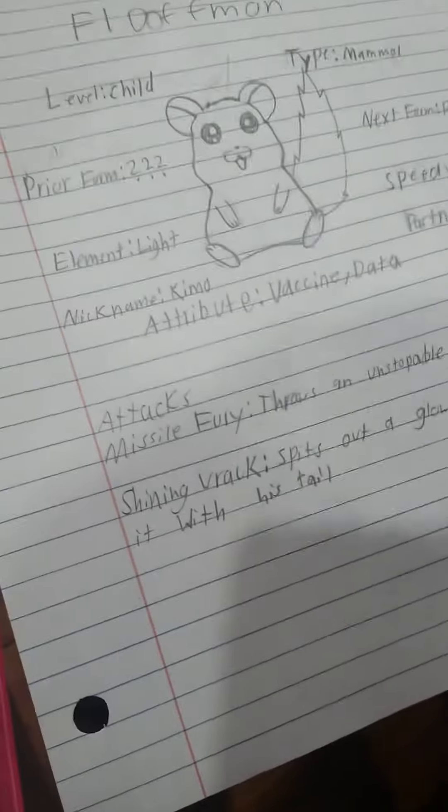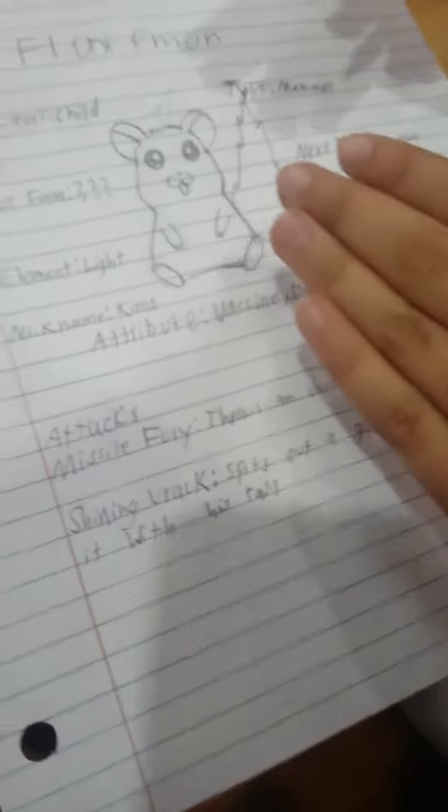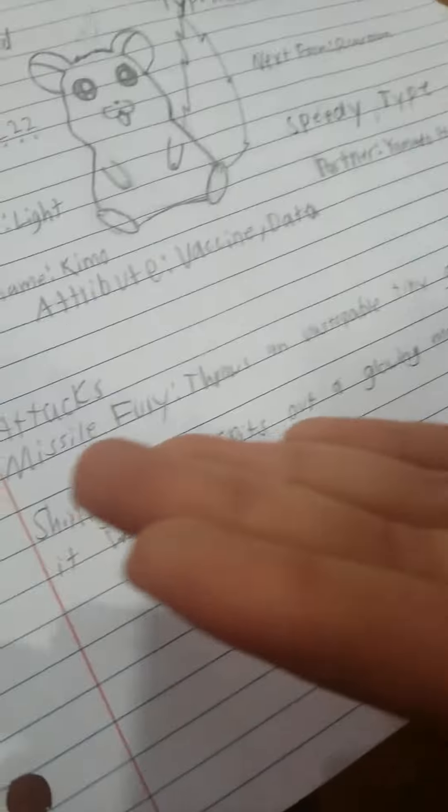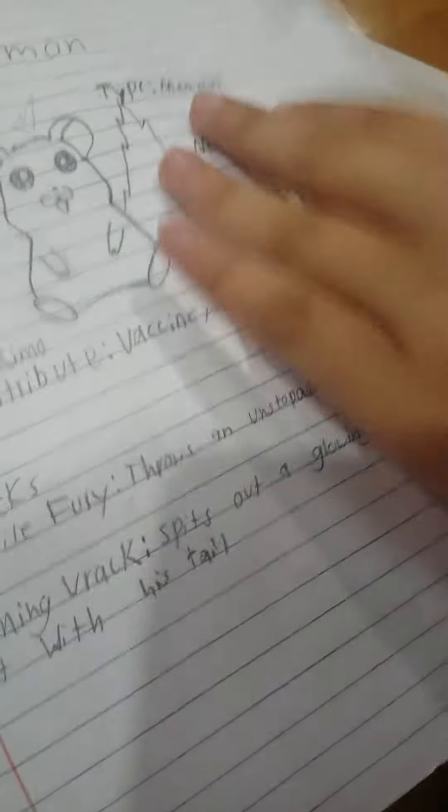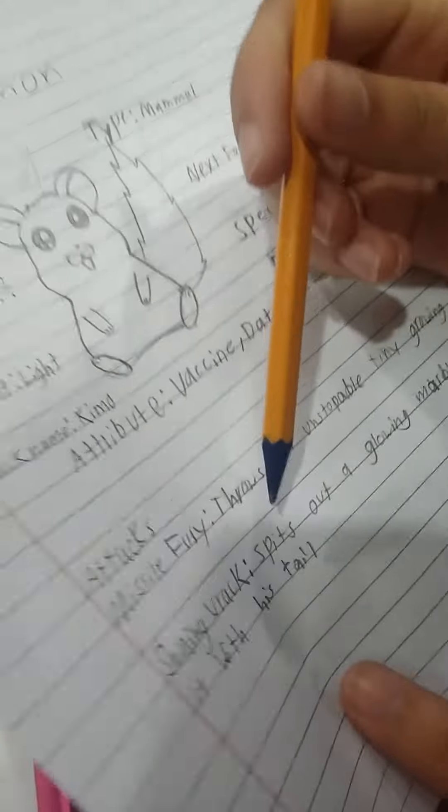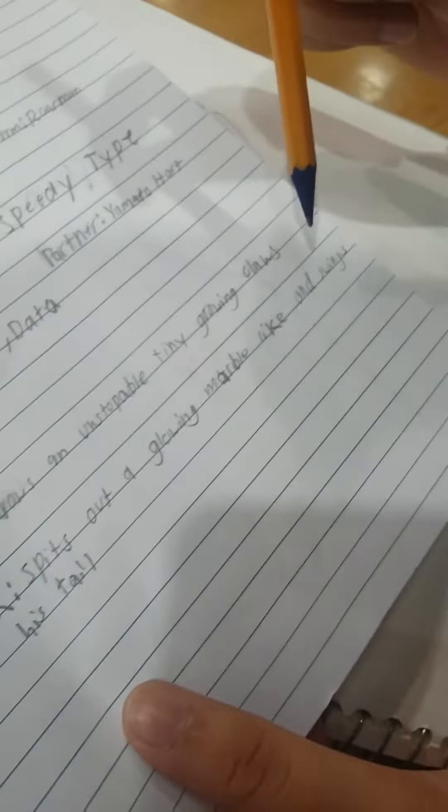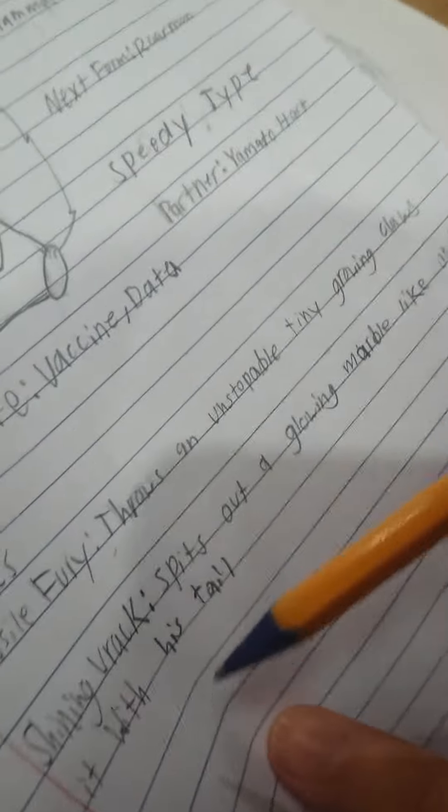Bobo's moves of Mr. Fury and Shining Rack. Shining? I mean, is it like a bird rack? No, no. But it's like shiny? A shiny chariot? He spits out like a light, a nice feel, then distracts him with his tail. It's nice, it's good. He spits out a glowing marble and swings it with his tail.